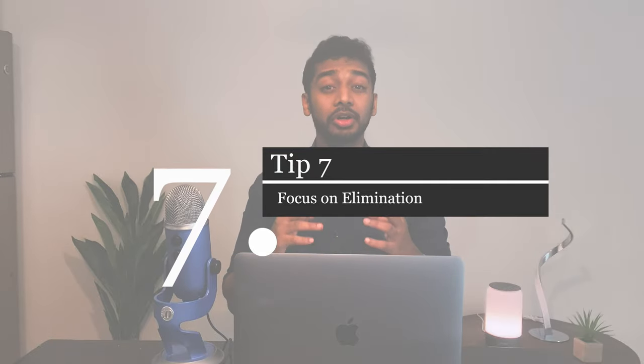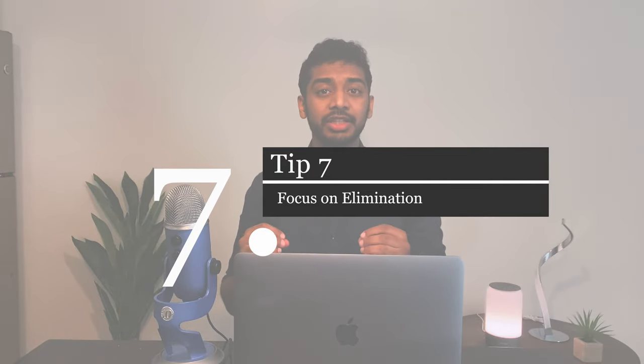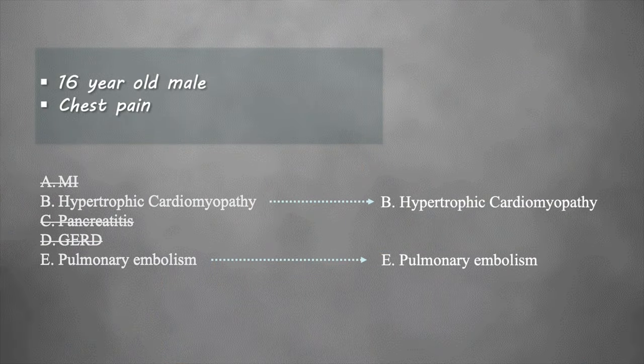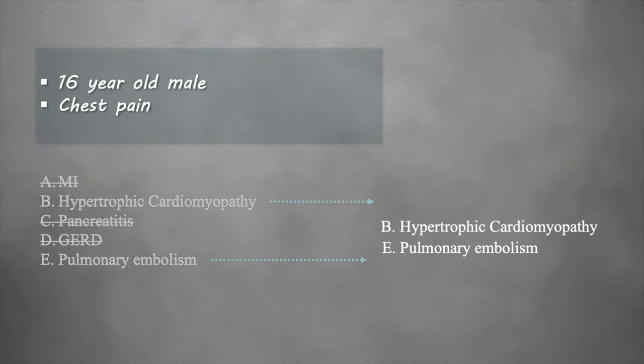You also have to focus on elimination early on. You're going to have four to five options and you need to eliminate the ones that don't make sense. For example, if there's a 16-year-old presenting with chest pain and one option is MI, you should be eliminating that early on. Slowly over time, you get better at eliminating until you get to the last two. There's a certain method I used for my USMLE Step 1 to help choose between the last two.